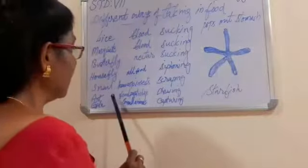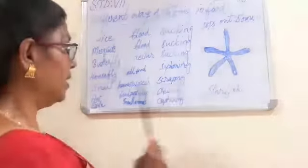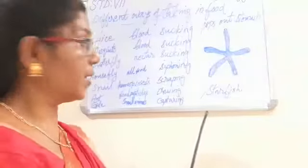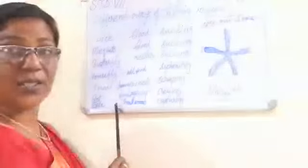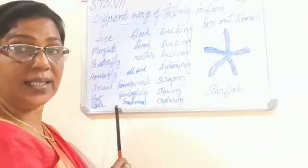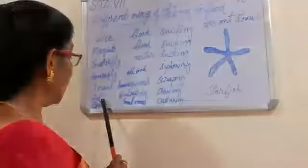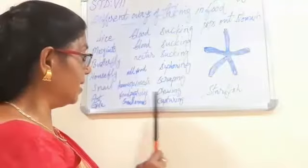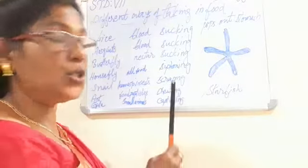A snail normally feeds on leaves and insects, and the mode is known as scraping. Ants normally eat food particles, and the mode of taking in food is known as chewing.